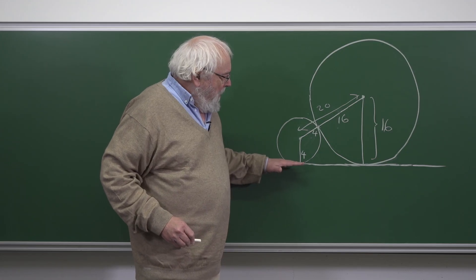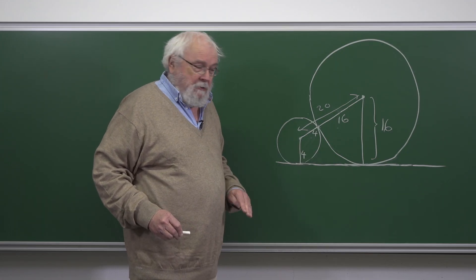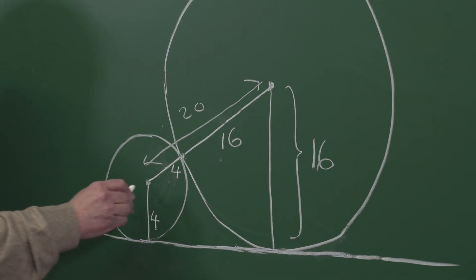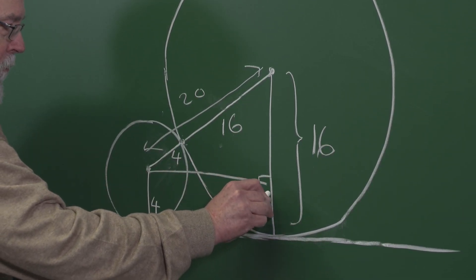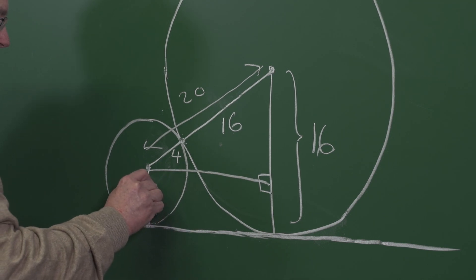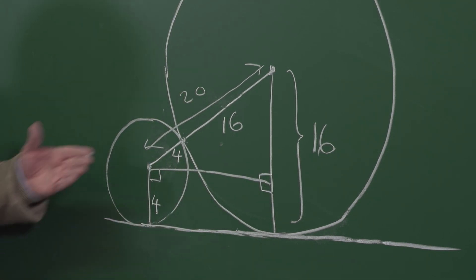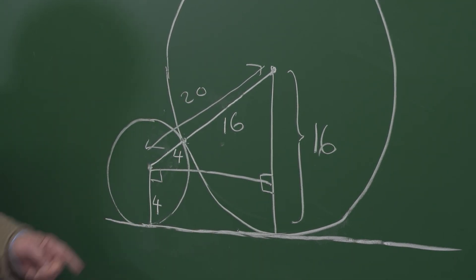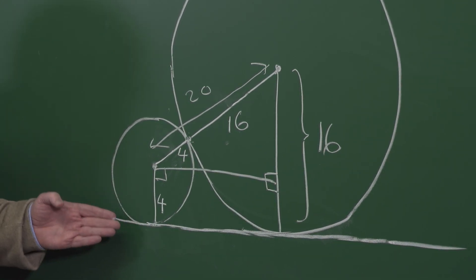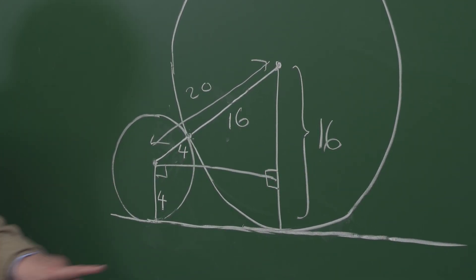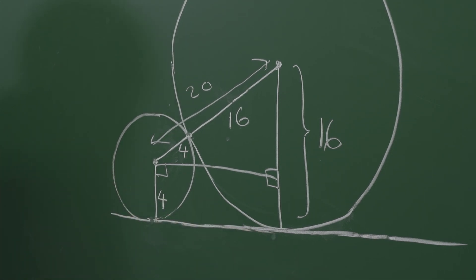Now I'm going to draw a line which is parallel to the horizontal base and through this center. We're going to get this rectangle at the bottom. Its height is going to be 4, and its width is going to be what we're after: the distance between these two contact points.